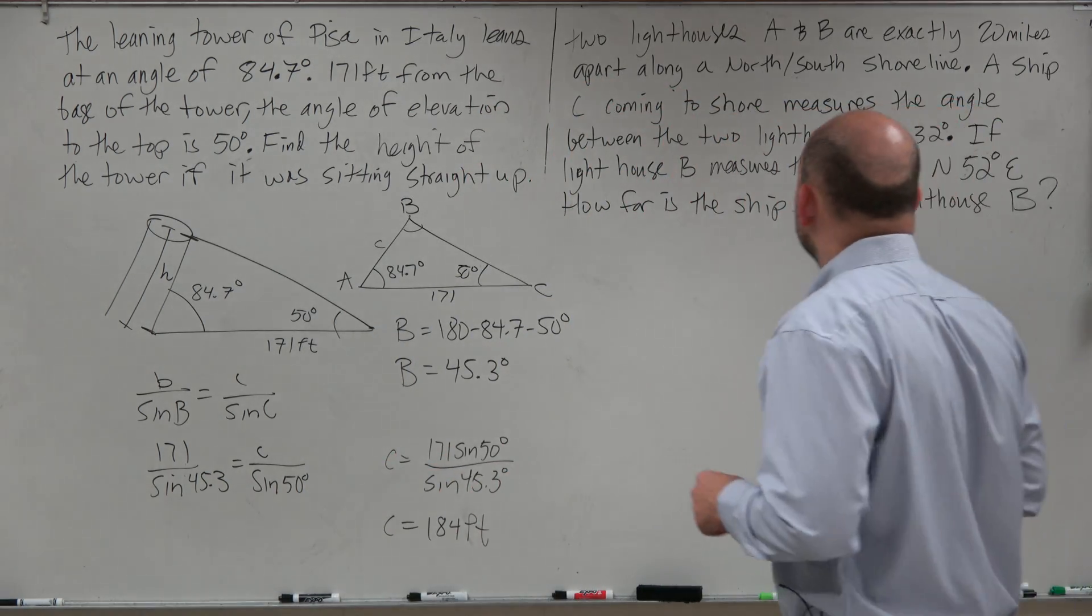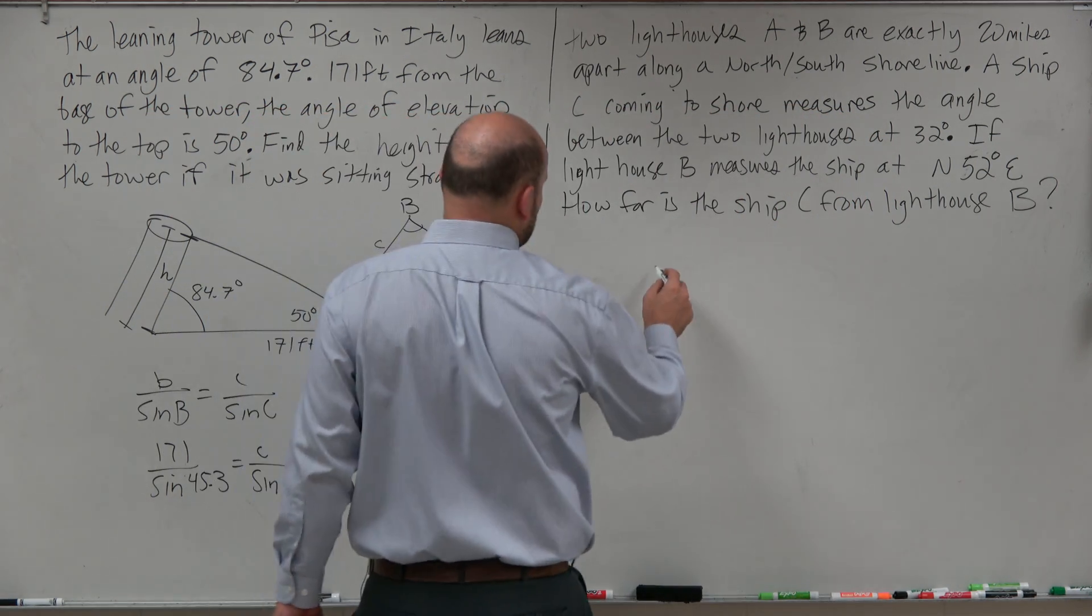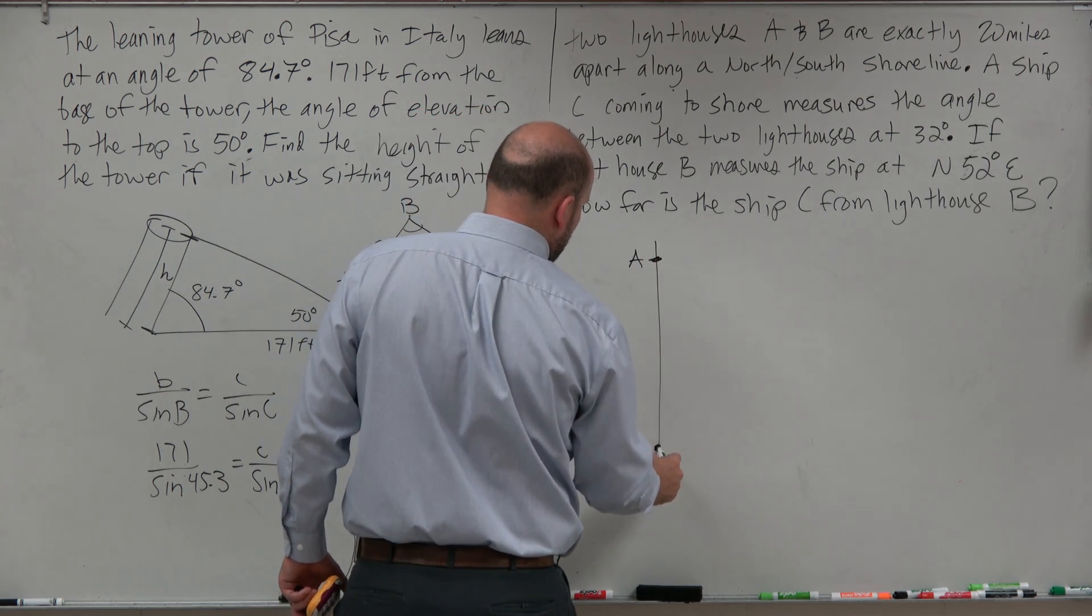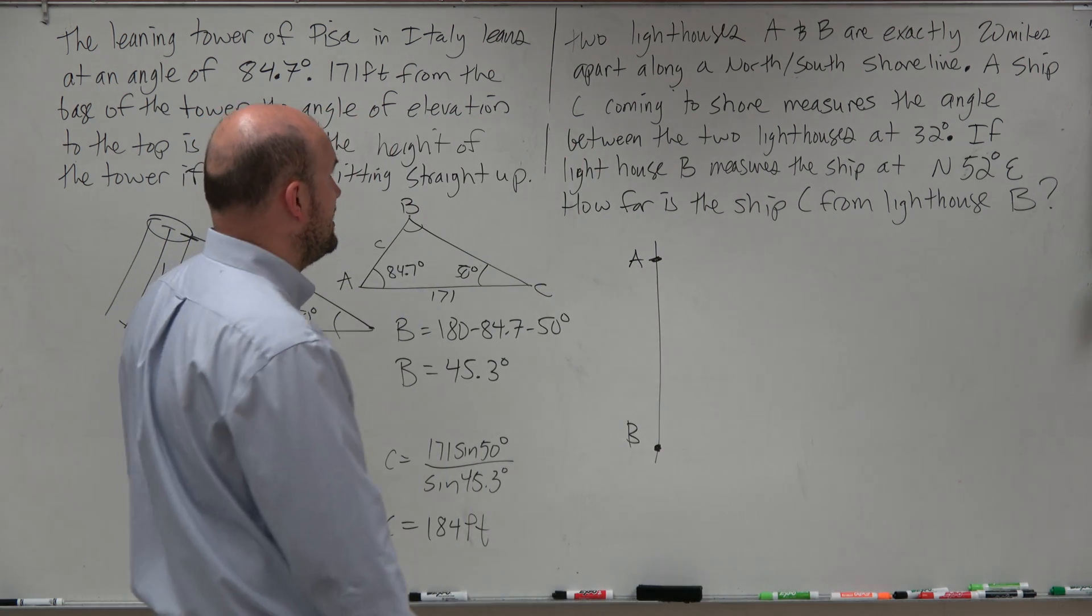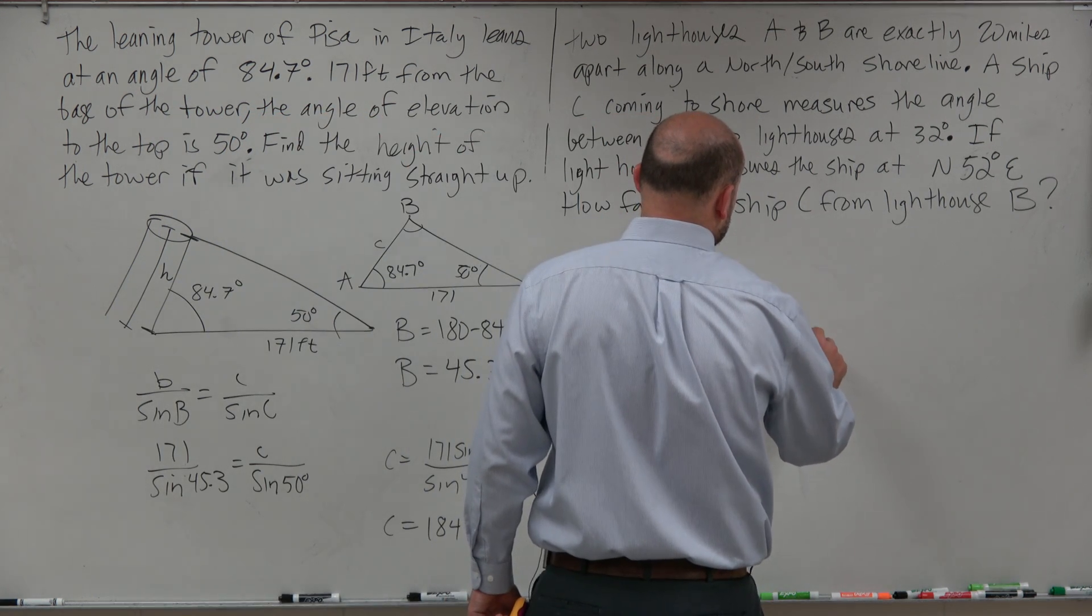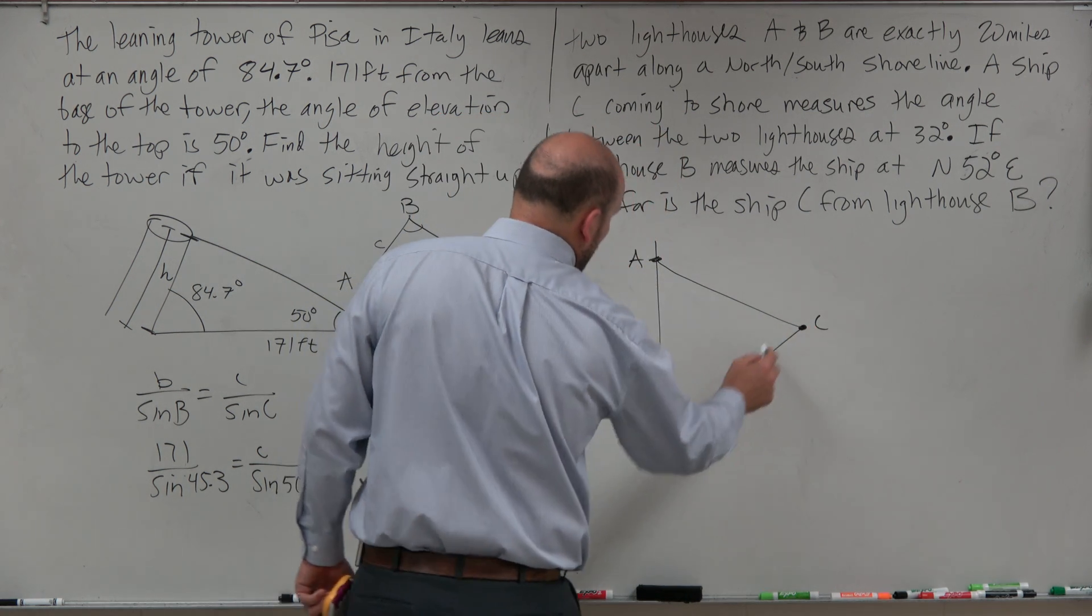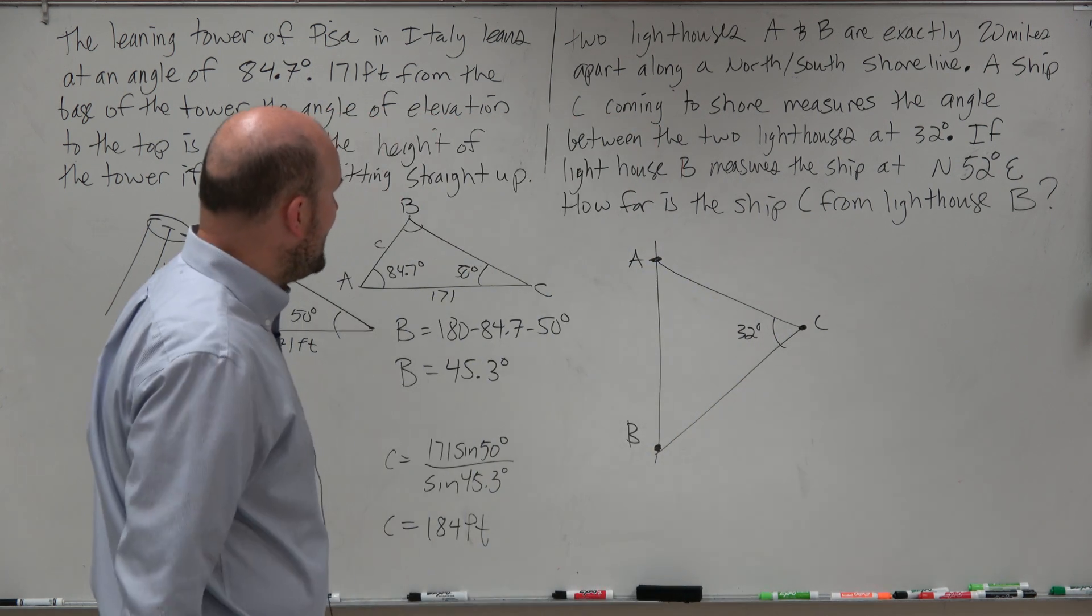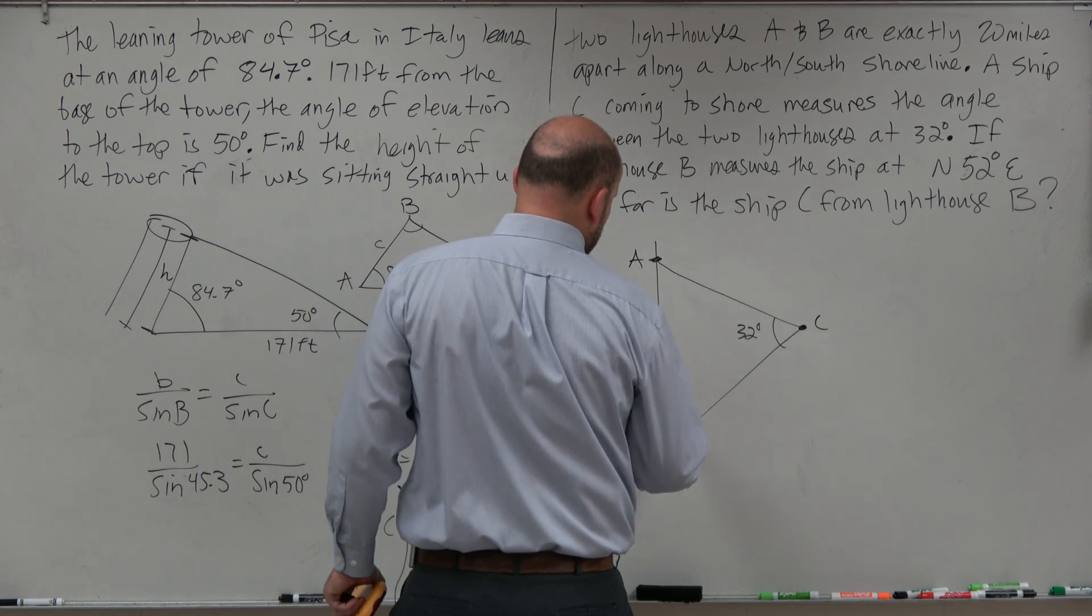The next one says two lighthouses A and B are exactly 20 miles apart along the north-south shore. So I'm just going to create two little lighthouses. We're going to have A, and we're going to have B. A ship C is coming to shore and measures between the two lighthouses at 32 degrees. So we have a little C right here, and it looks like they're coming into shore, and they measure the angle between the two to be 32 degrees. If the lighthouse B measures the ship at 52 degrees east.